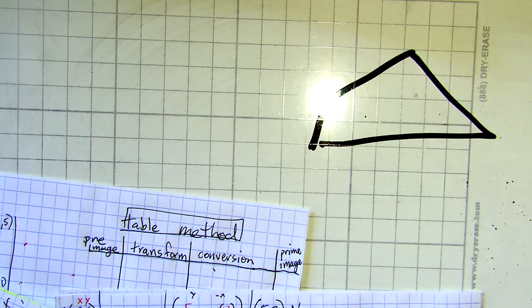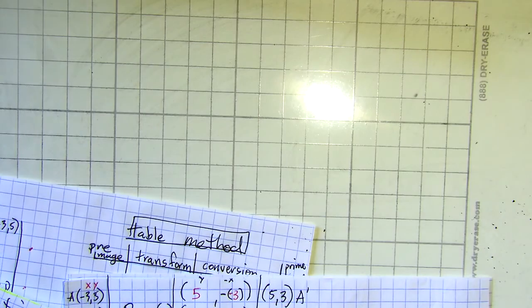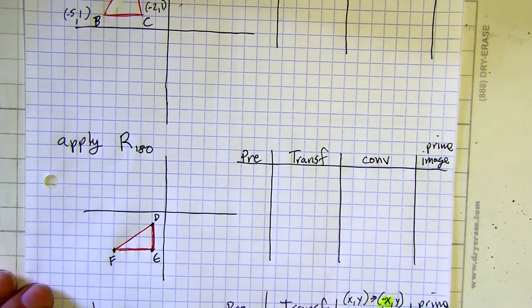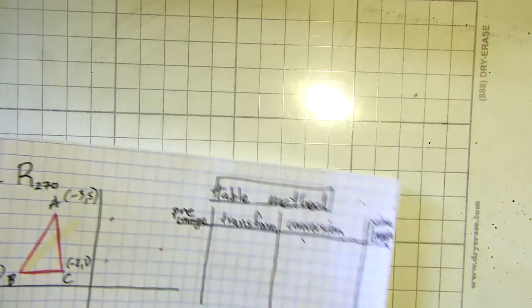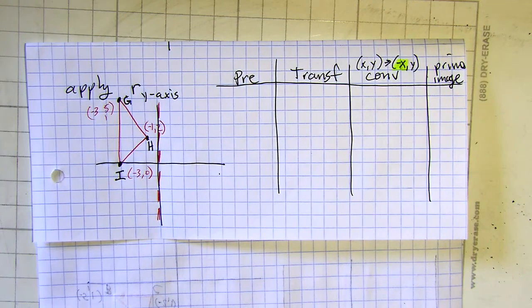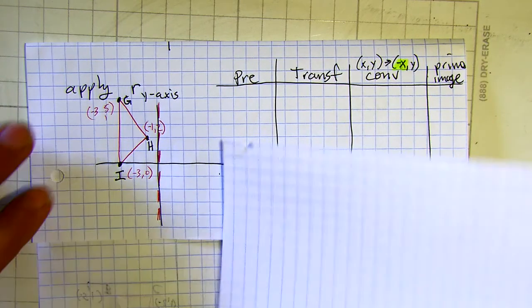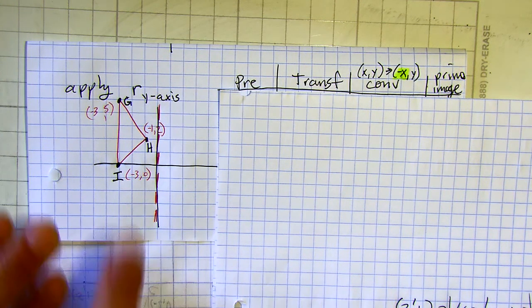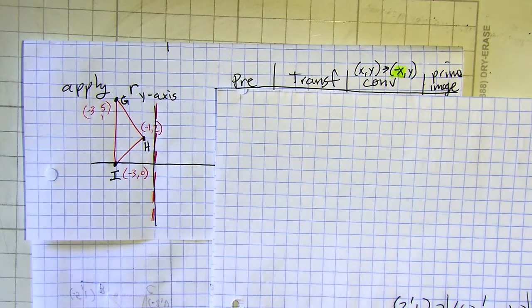We've got time for one more. I only gave you six problems because if you can focus on one and do it really well, then focus on another type. Let's do a reflection. This is the last thing we've got for the day. Make a quick graph — these graphs don't have to be perfect. If you label the points G, H, and I, you can use printer paper. If you label the point, it's fine.